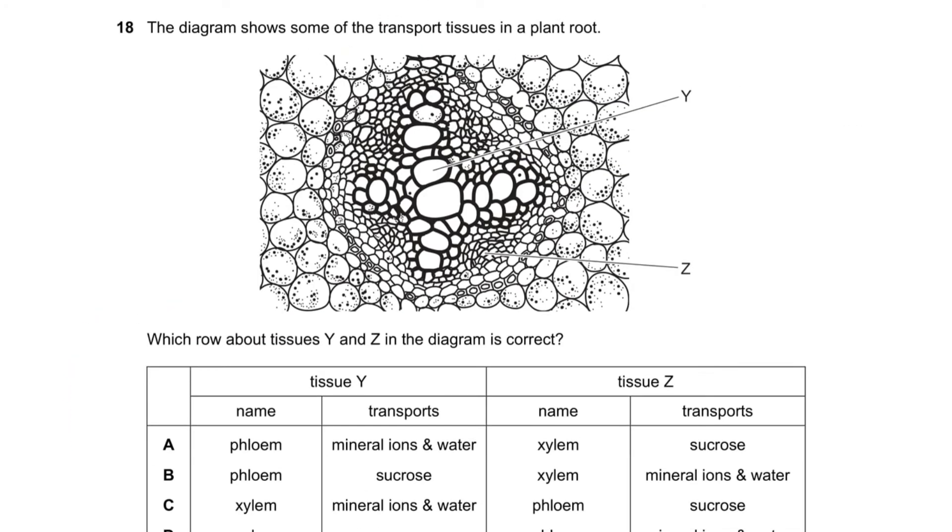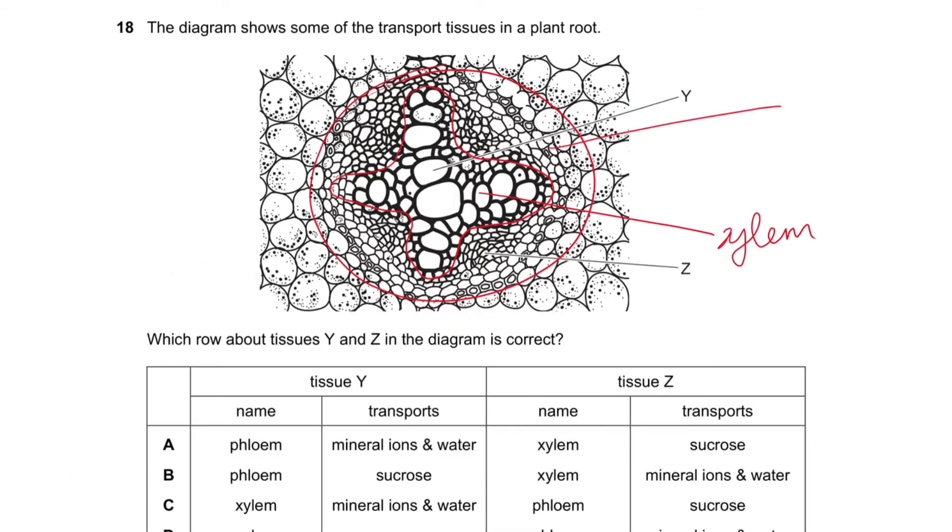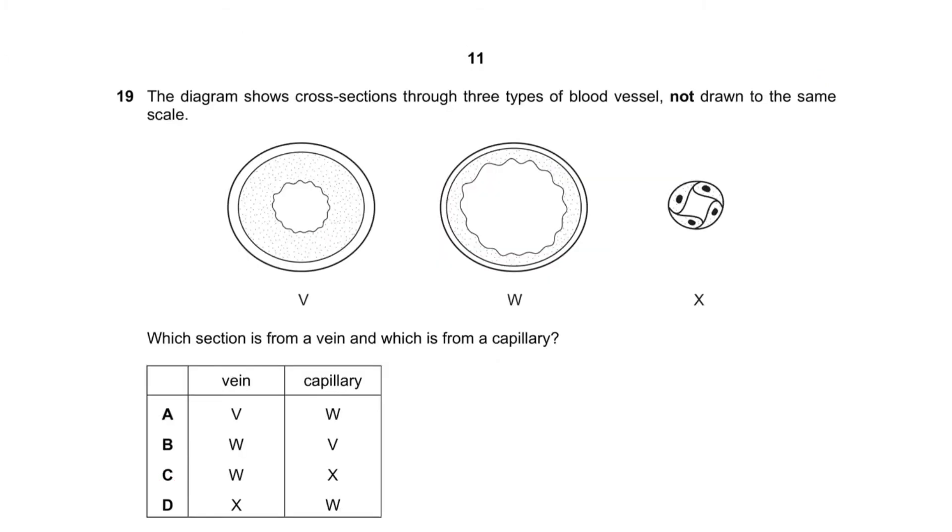Question number 18 says the diagram shows some of the transport tissues in a plant root. Which row about tissues at Y and Z in the diagram is correct? Okay, so this is our root. Here I'm going to draw it for you. As we said before, the inside is always designed. The xylem is always either in the middle or the top because it is the queen, as I said before. So Z is the phloem, and so it's not A or B. The xylem obviously transports water, so C.